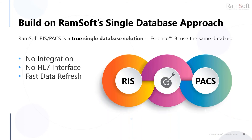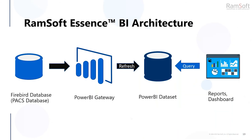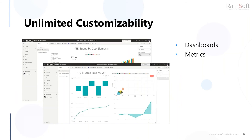If you are familiar with RamSoft Power Server, you will know that we have a single database solution, and Essence BI leverages that same single database. A single database does not require an integration or an HL7 interface, and this allows for fast data refresh required for analytics. It was easy to adapt and plug our Firebird database into the Power BI infrastructure to deliver reports and dashboards of your radiology data. One of the most important features to look for in a BI solution is customizability — primarily through dashboards and data visualization tools.